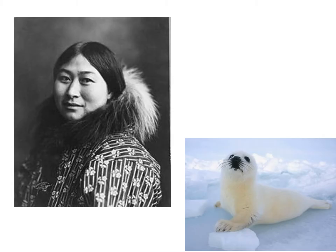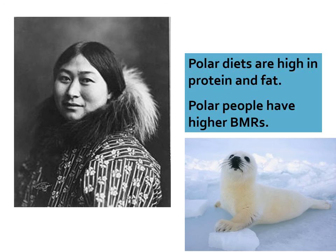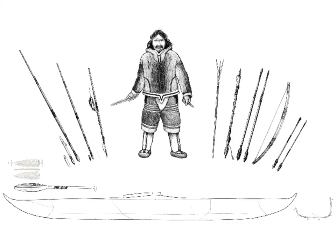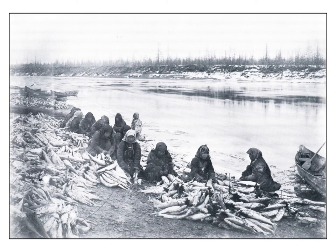In terms of polar people and diets — polar diets are high in protein and fat because polar people have higher BMRs. They require higher quality fats and proteins in order to maintain basic homeostasis, often getting these from things like seals. Many Arctic fish species are also very good sources of high quality fats and proteins for polar people with higher BMRs.